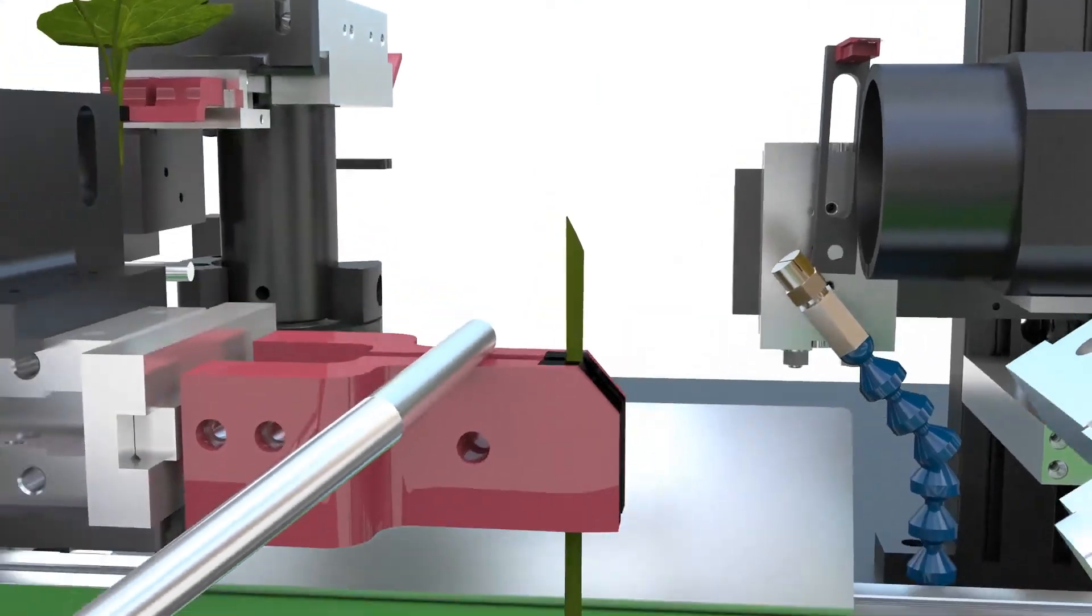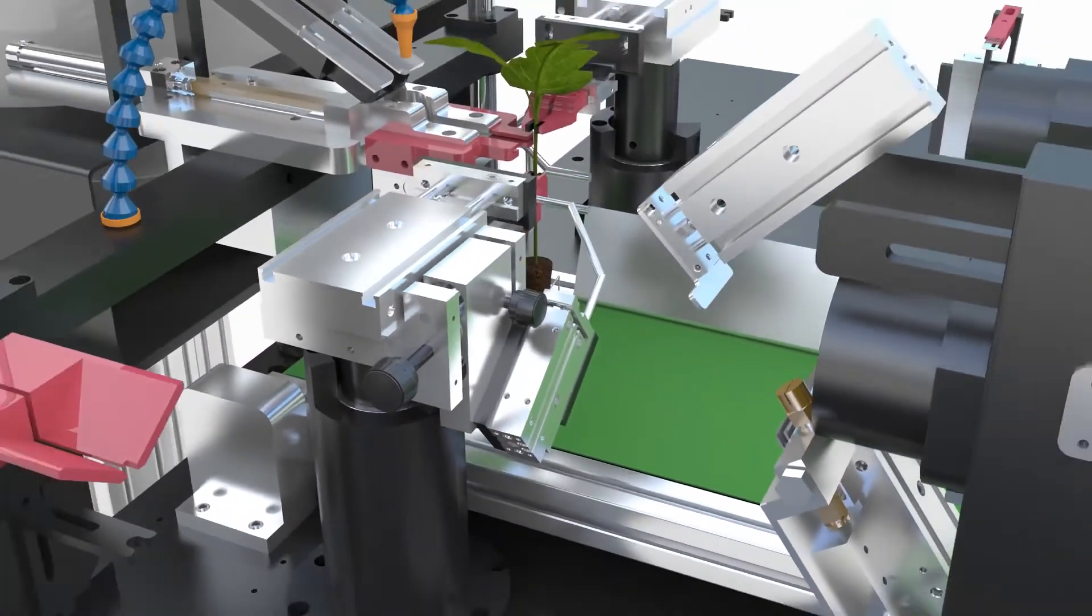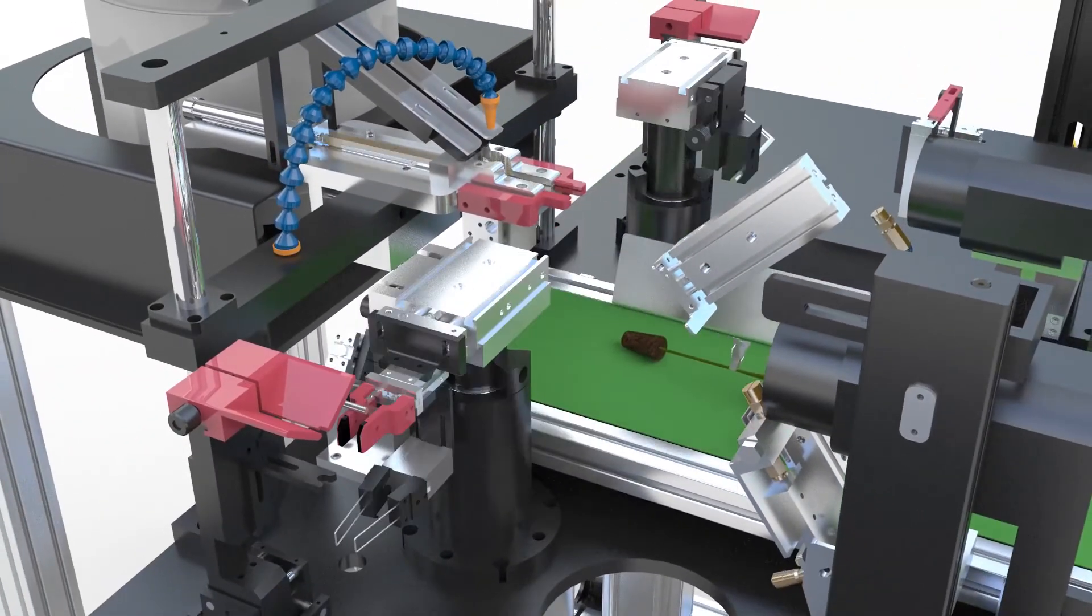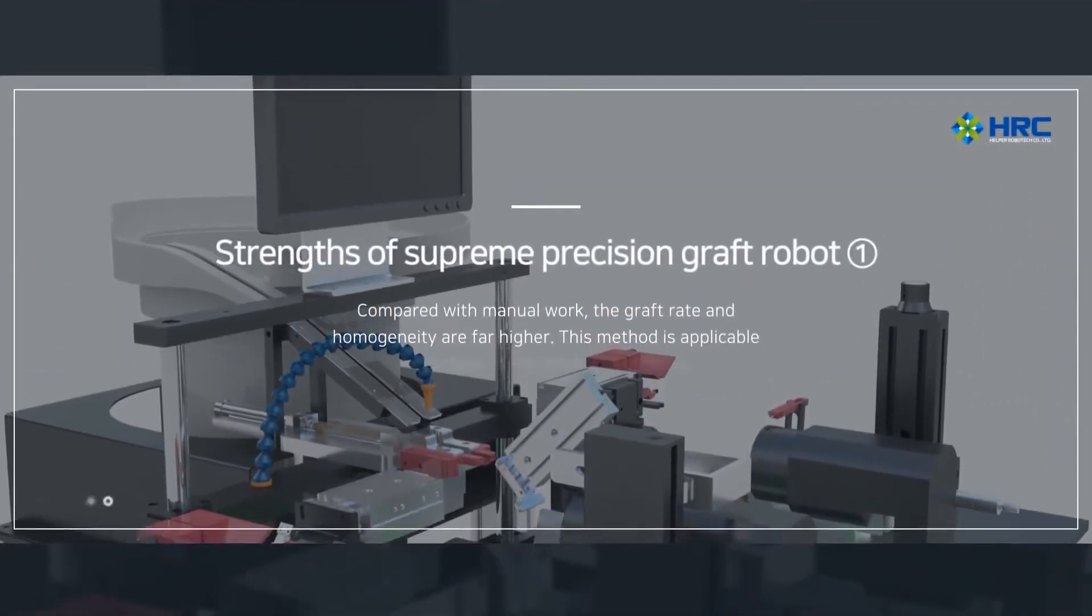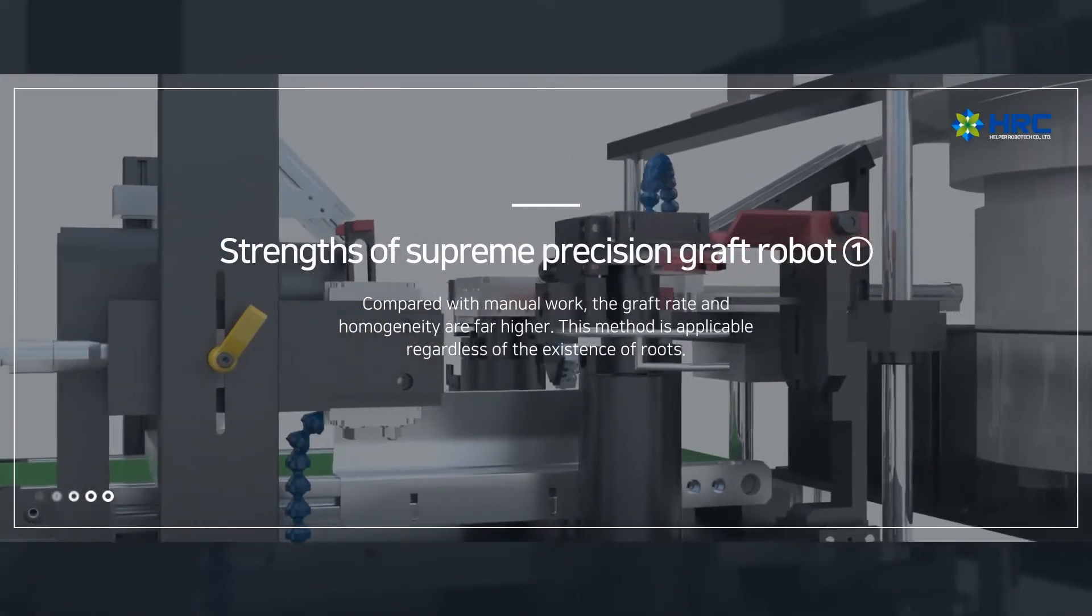Graft 40 to 60 millimeters above understock roots at a 30 degree angle. Compared with manual work, the graft rate and homogeneity are far higher.